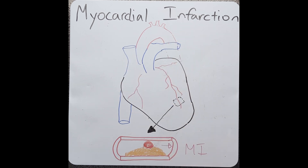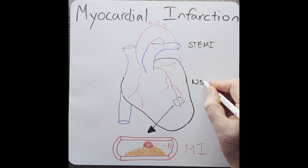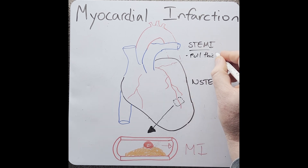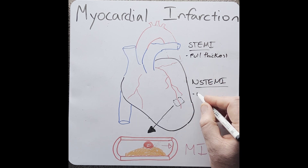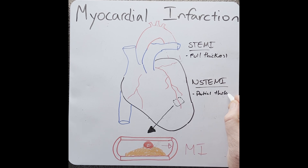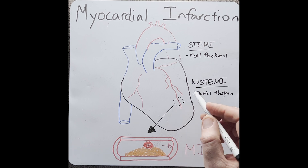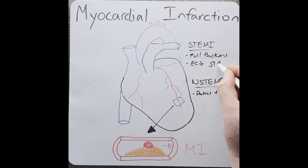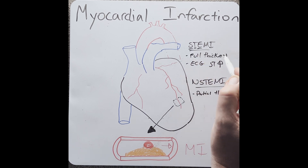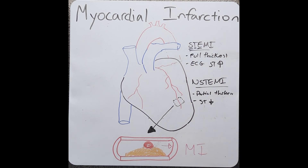Commonly there are two types of MI: number one, STEMI, and number two, NSTEMI. In STEMI there is a full thickness infarct, which means the whole muscle wall dies, whilst in NSTEMI it's a partial thickness infarct. If you look at the heart with an ECG — which is basically looking at its electrical activity — in STEMI we see an ST elevation, and this is why it's called a ST-elevated MI. Whilst in a non-STEMI we see an ST depression, and this is why it's called a non-ST-elevated MI.